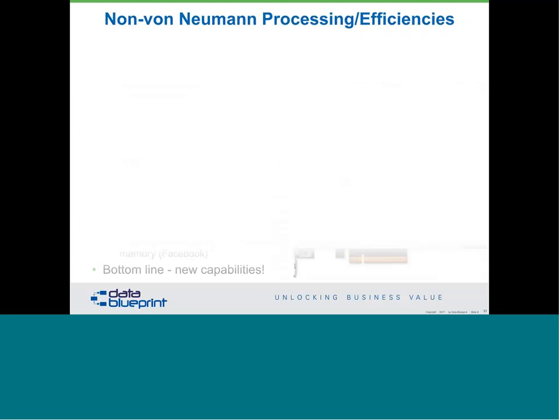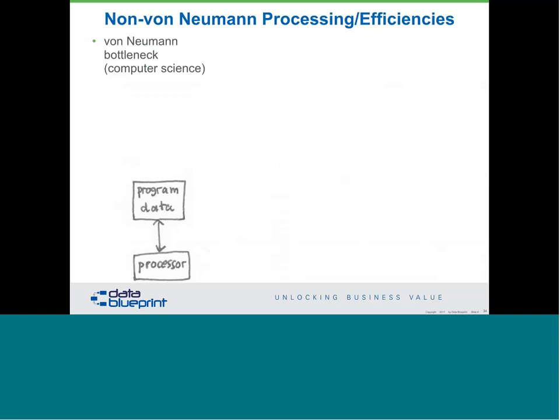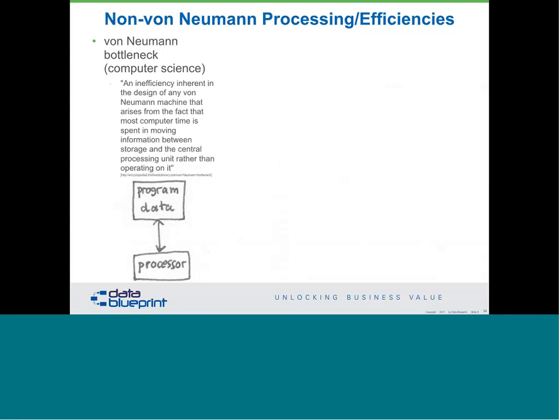I promised I'd describe Von Neumann architecture. John von Neumann wrote the first paper that popularized the whole computing paradigm. What I'm showing here on the screen is that we used to take data and move it to the processor — the CPU, central processing unit — and take the program and move it to the CPU. That movement shown by that double-ended arrow is the slowest thing that a computer does. All that movement was a big problem.